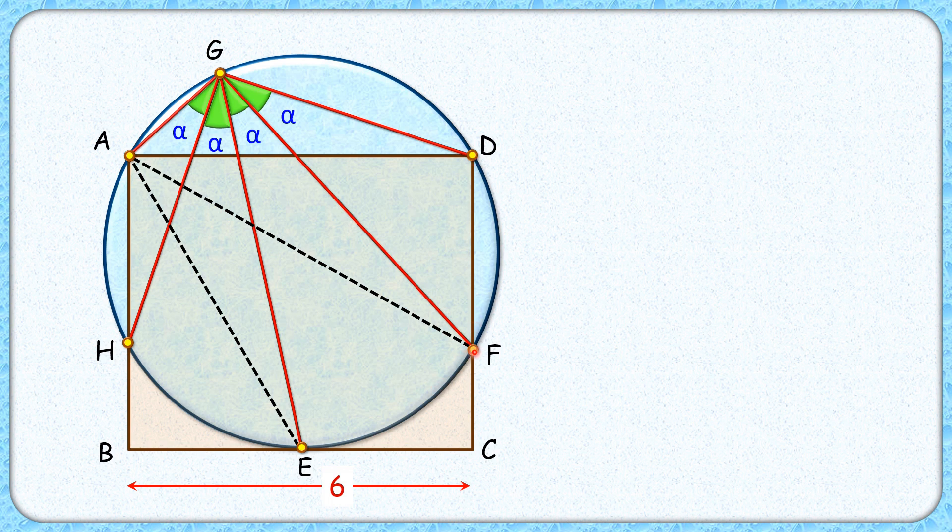Now here if we look, DF is a chord which is sustaining angle alpha at point G, and thus by theorem it will sustain same angle alpha at the remaining part of the segment, and thus it will sustain same angle alpha at point A. So this angle here is alpha degrees.